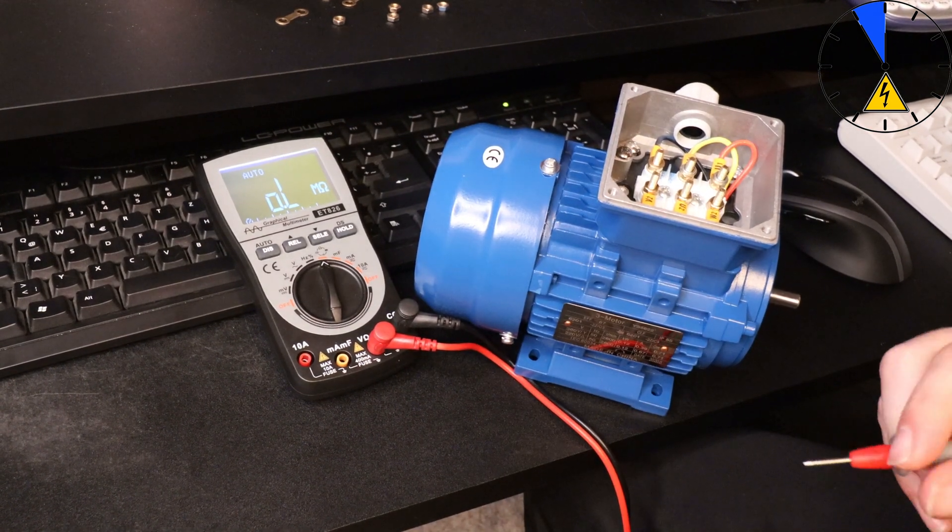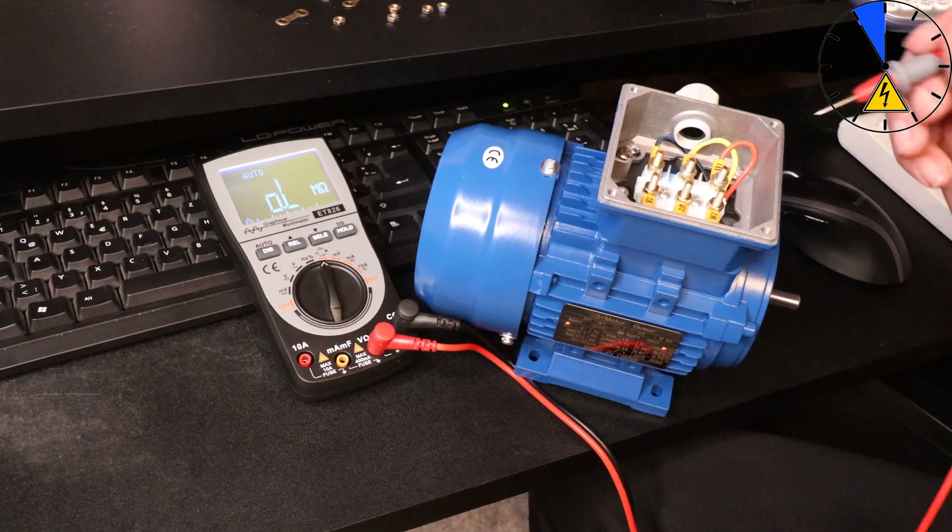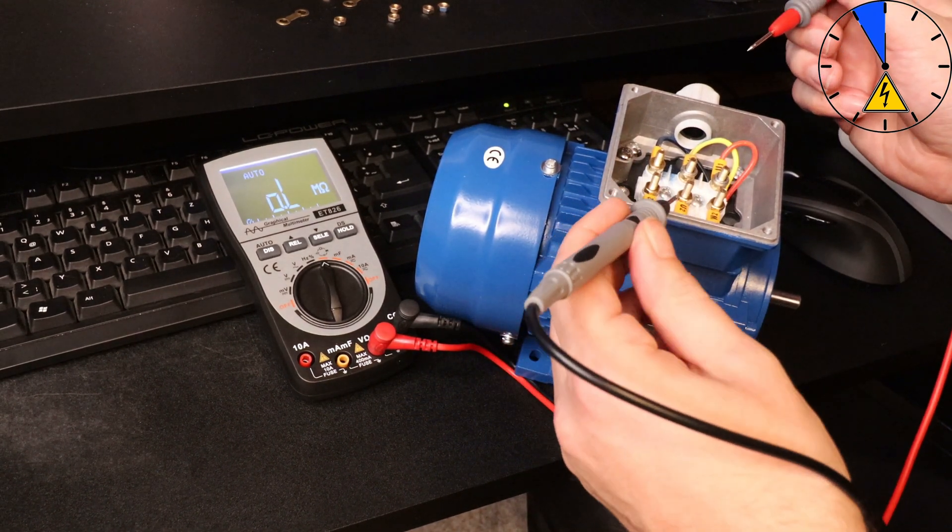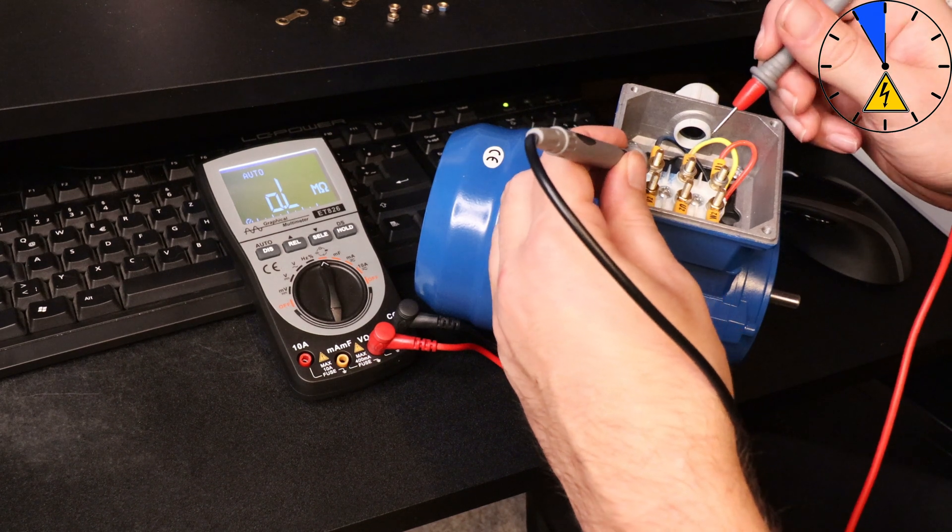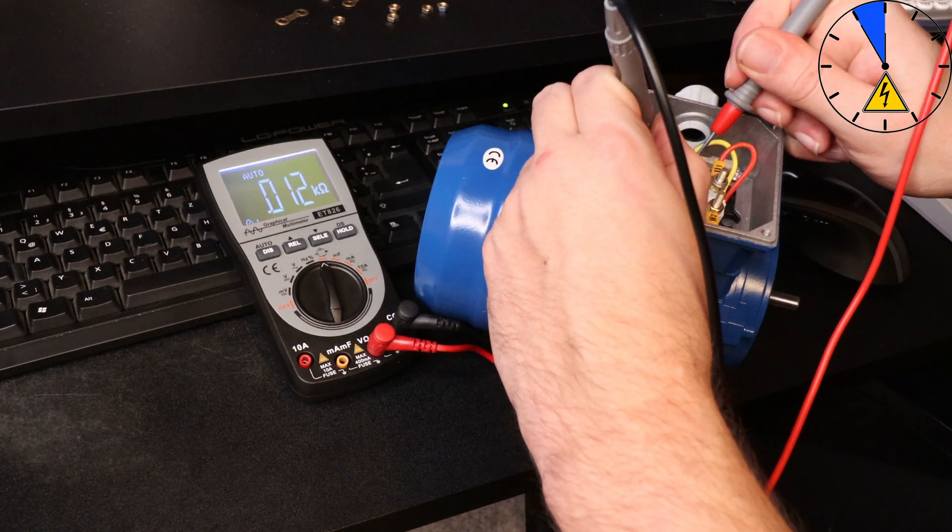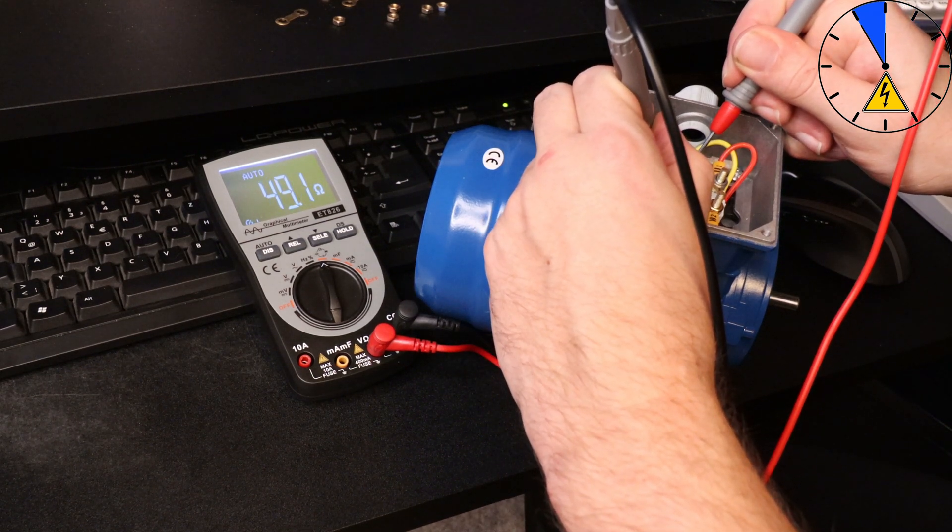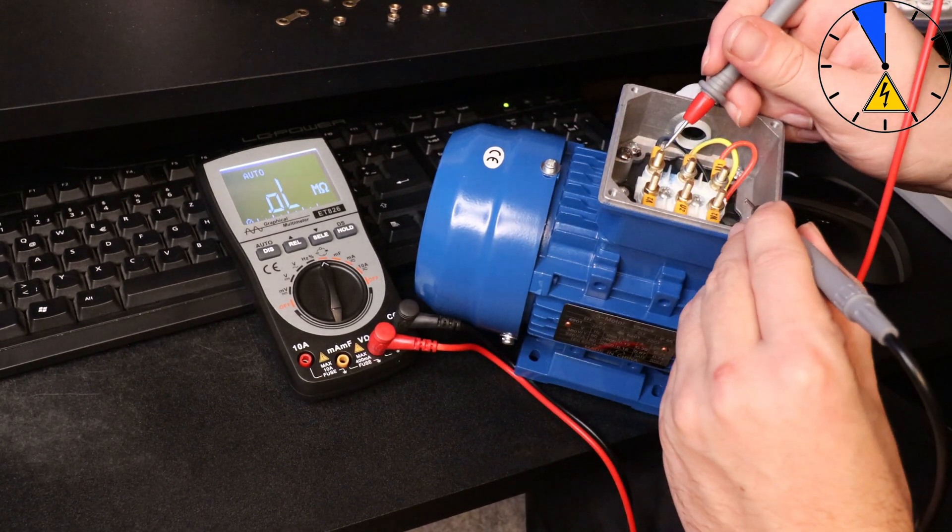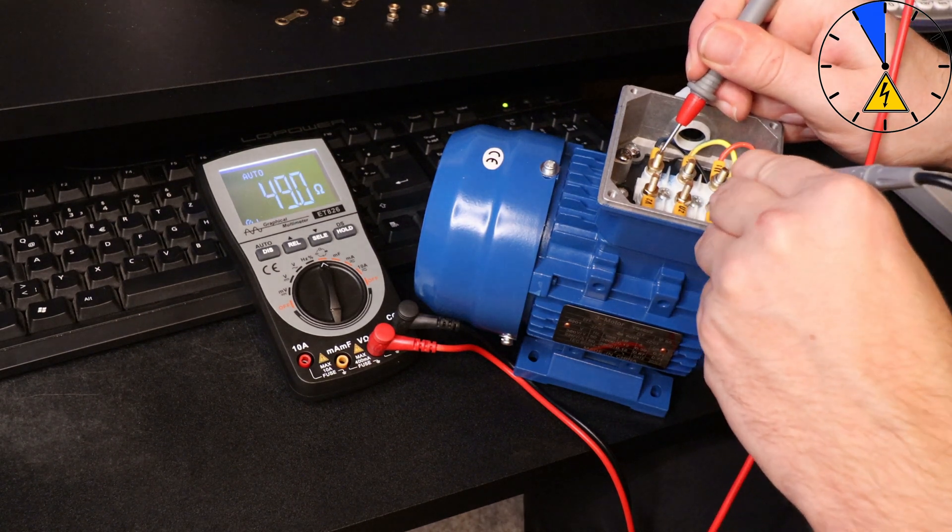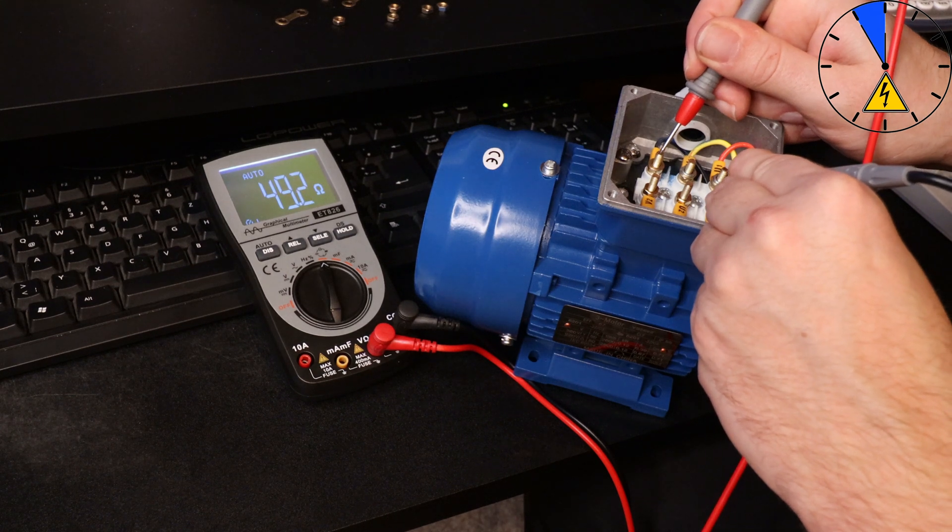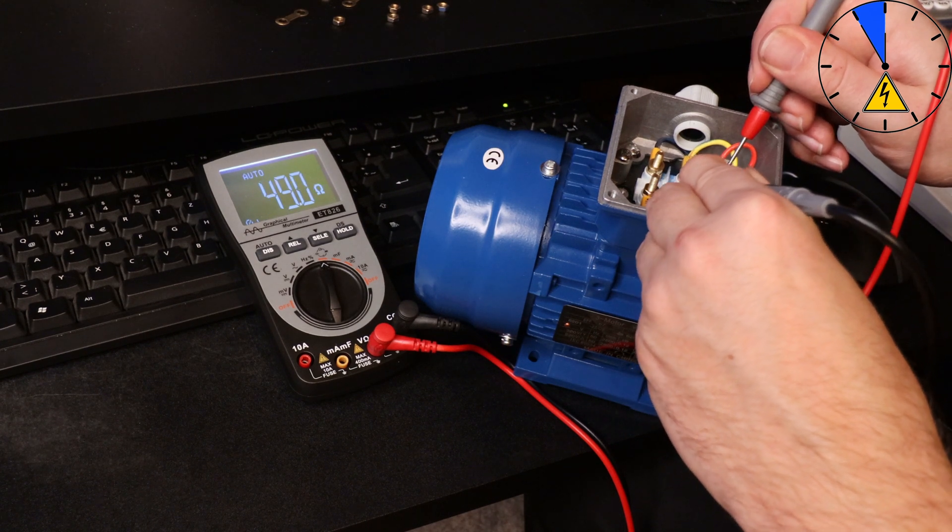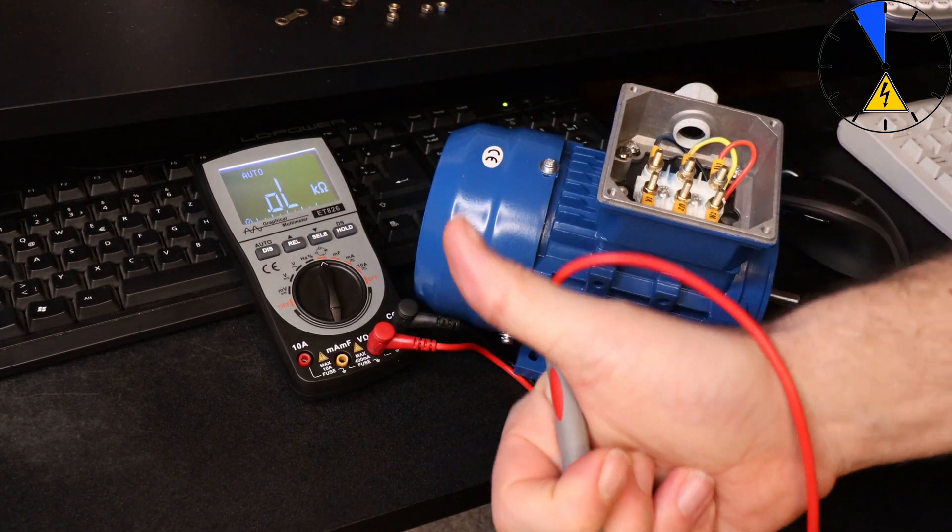The next test is every resistor of these three coils has the same resistance. Then I go from V2 to V1 and here we have 49 ohm. Then from W1 to W2 and the resistance is 49 ohm. And then from U1 to U2, 49 ohm. This test passed.